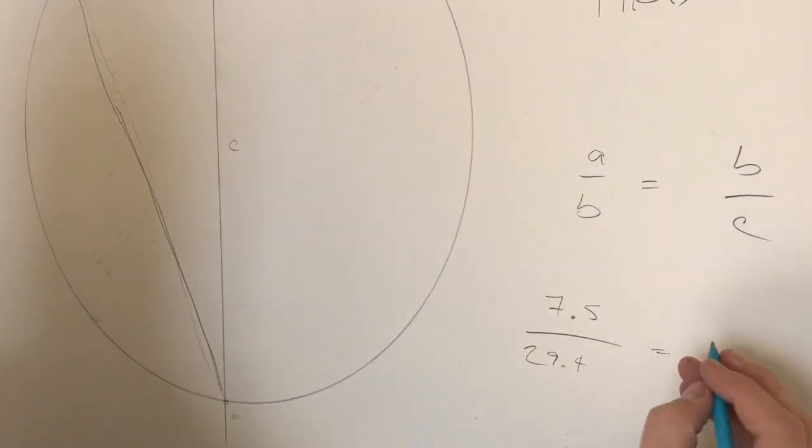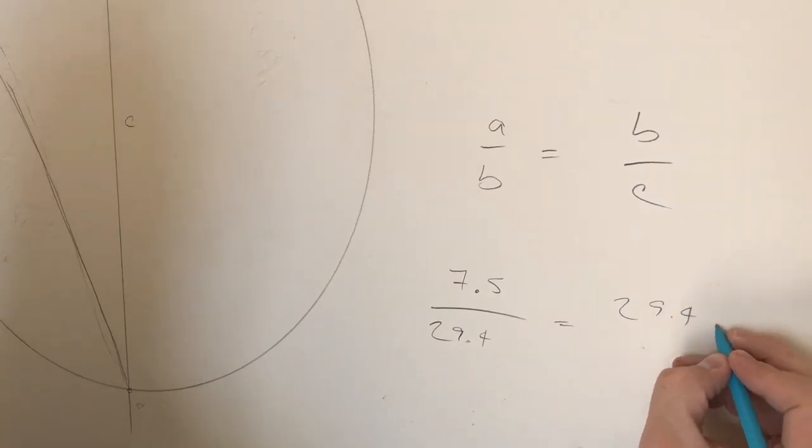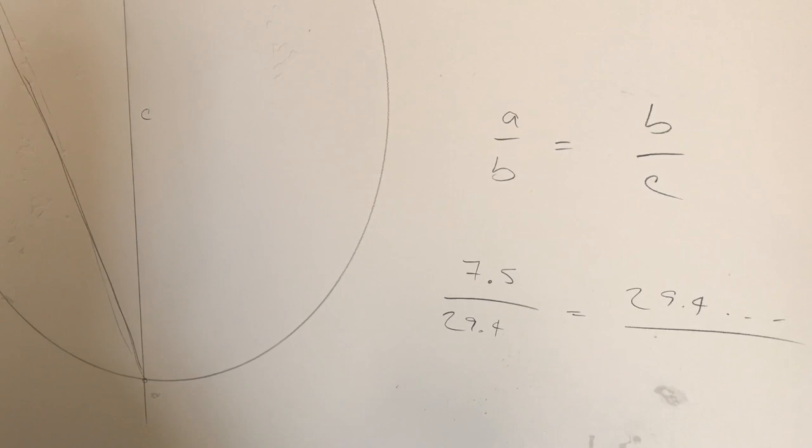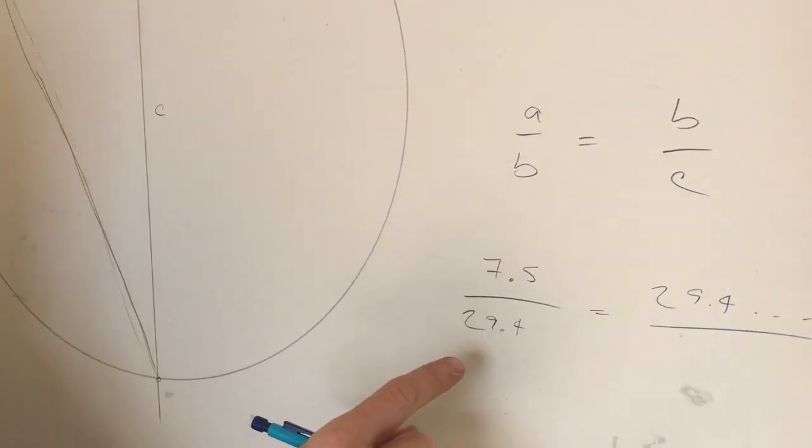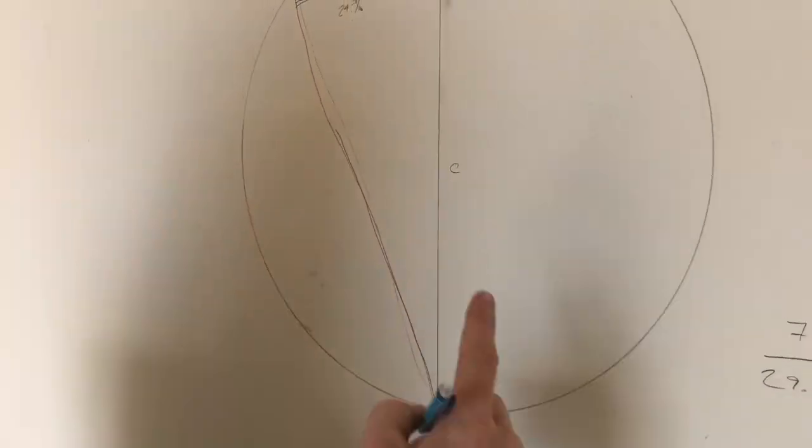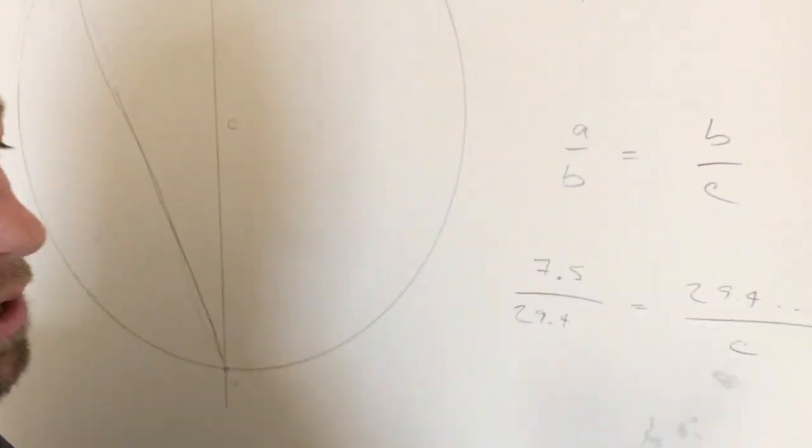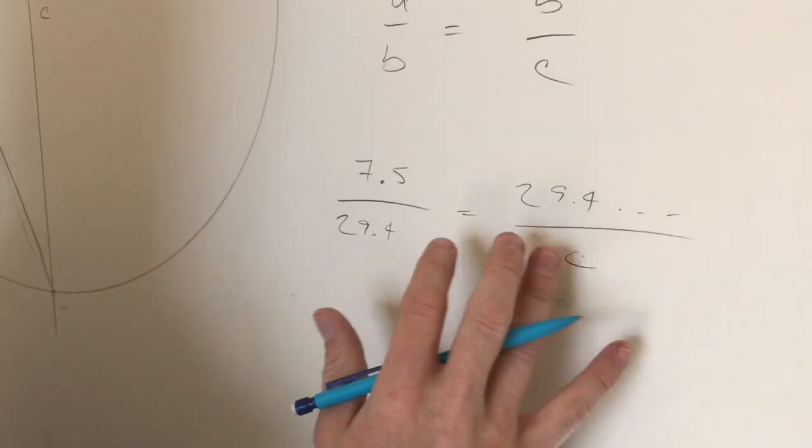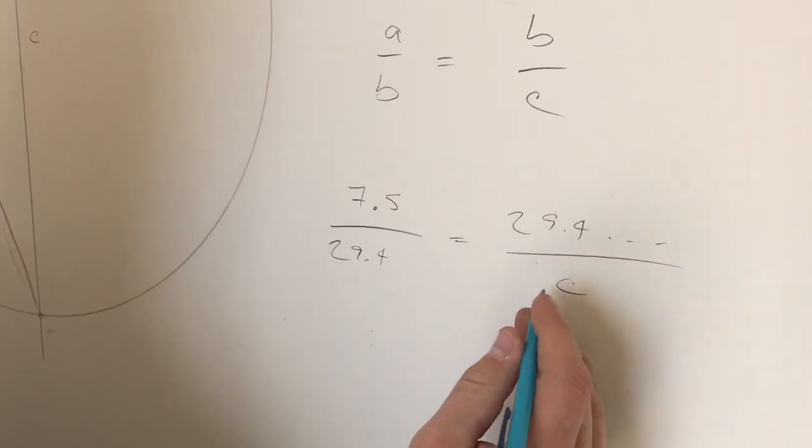You want to be a little more specific when you actually go to do the math. And c, we don't know what c is, so we've got to figure out what c is. So the way that we do that is we can cross cancel or we can get c by itself.